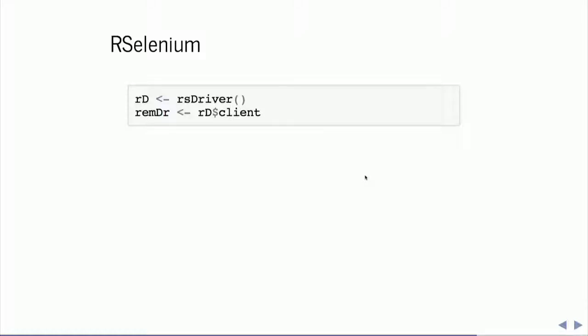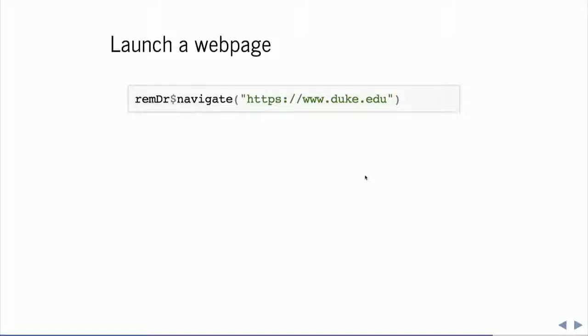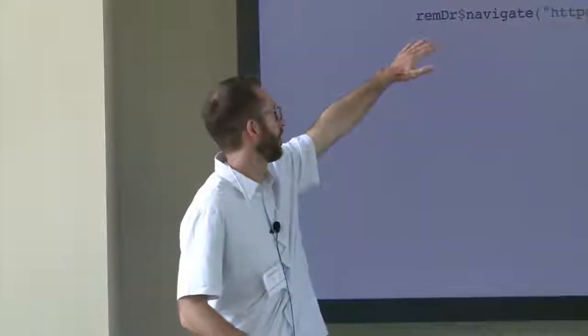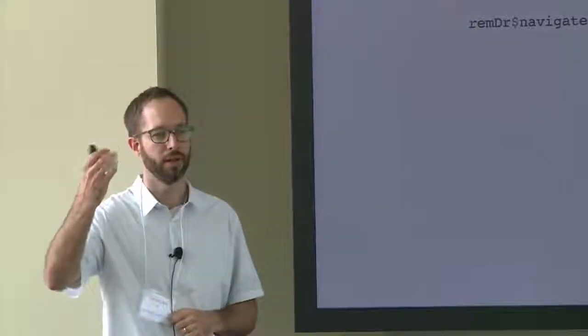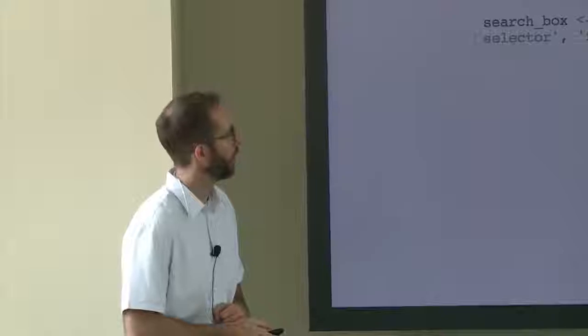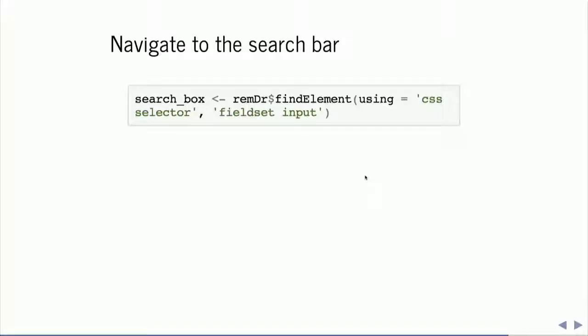There is a tutorial linked right here that helps you install RSelenium across a number of different operating systems. Once we've got Selenium running, we create an object that allows us to control our browser — that's what these two functions are doing. Once we do that, we can control the object — here called 'remdr' for remote driver — and say 'navigate to this link.' If we have Selenium installed and run this, a Chrome browser will open and go to www.duke.edu.